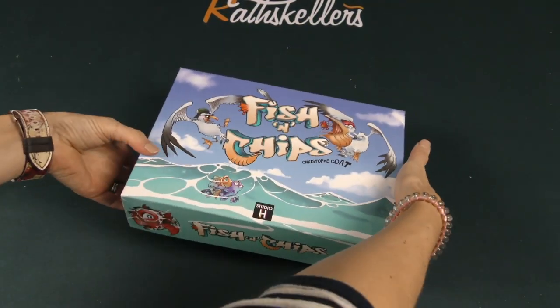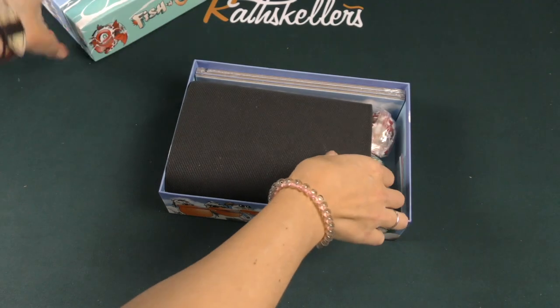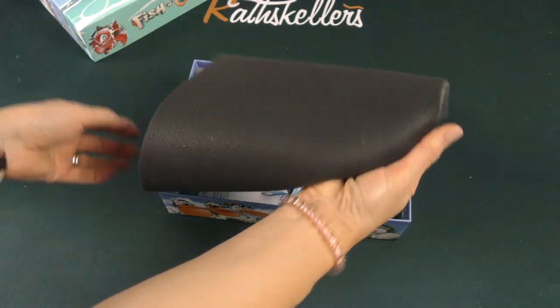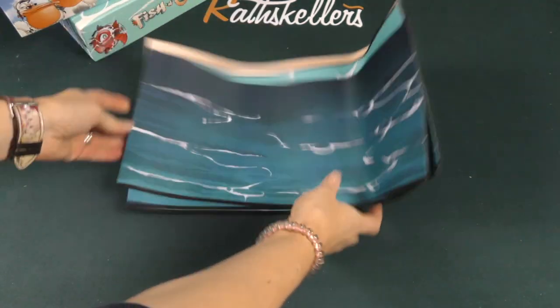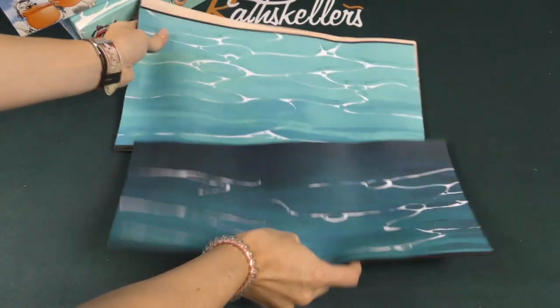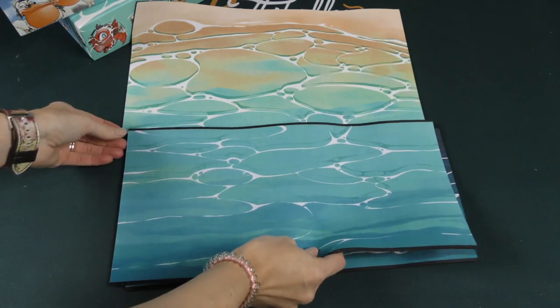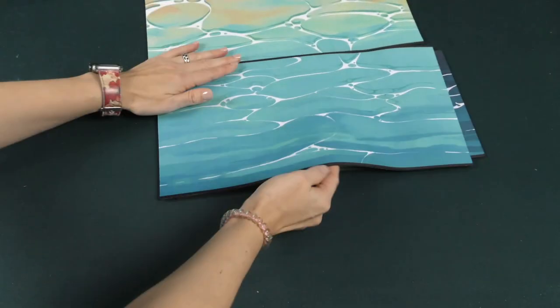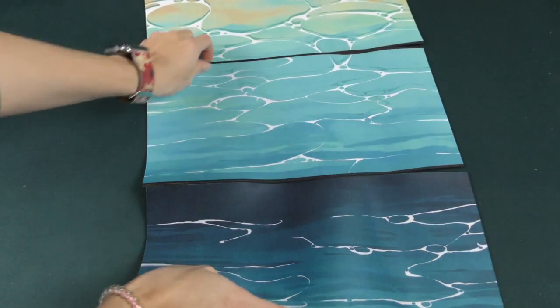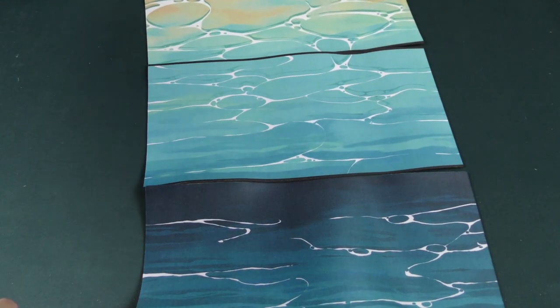All right let's check it out. Oh right off the bat we have a play mat. Oh play mats. Plural. To take a look at here. Ocean waves in a couple different colors. I'm assuming maybe they go together and form one big one. I don't know.